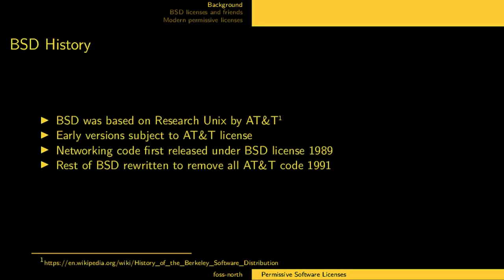The first one is the BSD license, and to understand that we need some BSD history. BSD is short for Berkeley Software Distribution. It's an operating system that was based on Research Unix, which Berkeley University got licensed from AT&T. This means that the early versions were subject to the AT&T license, and that caused some issues with distribution — everyone who wanted to redistribute it would be bound by that license, and you needed permission from AT&T.